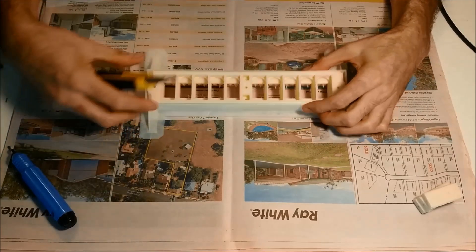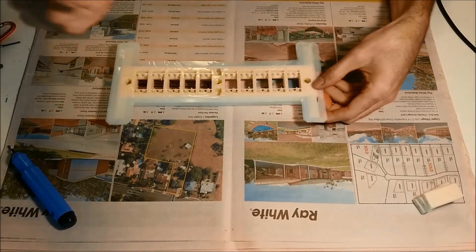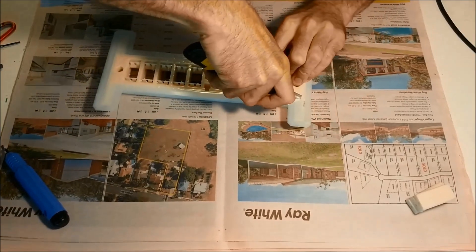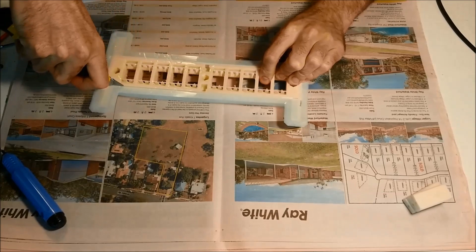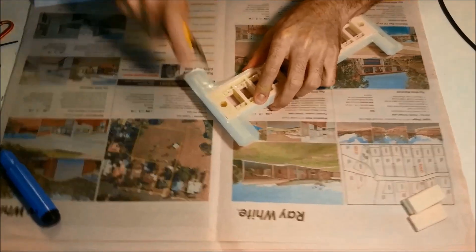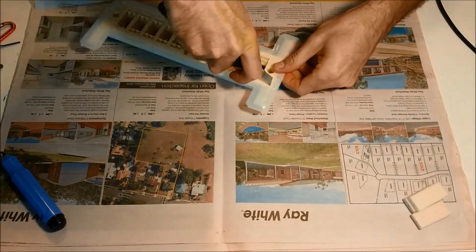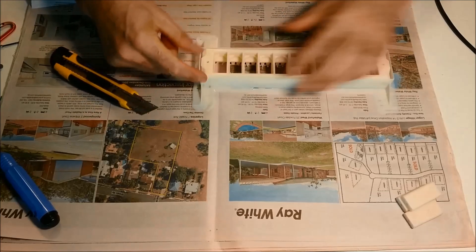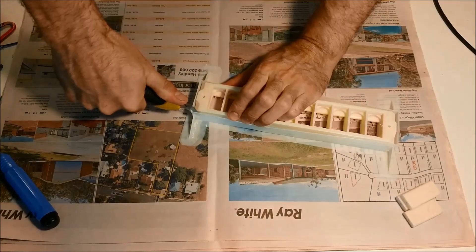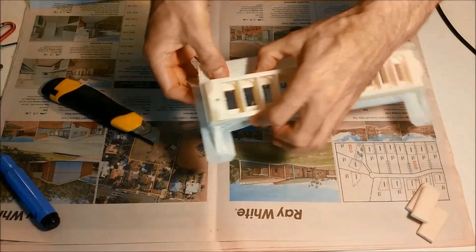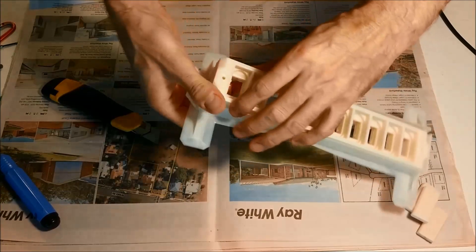I'm just going to use a blade and cut away the baffling from the module. Start on one corner and just go around the module. Then we have to slice down on the corners, put some pressure on that, and you should be able to break it all away.